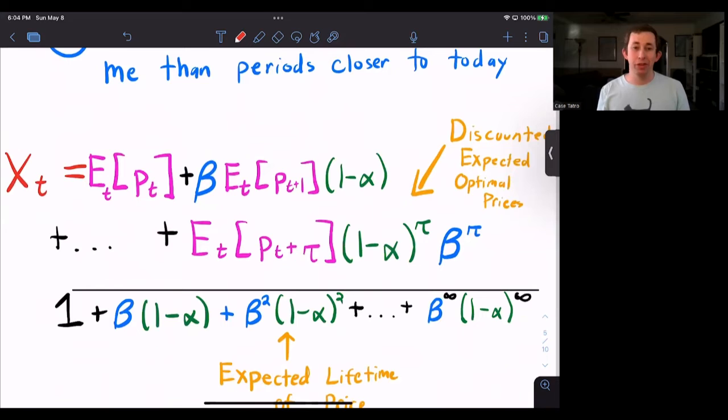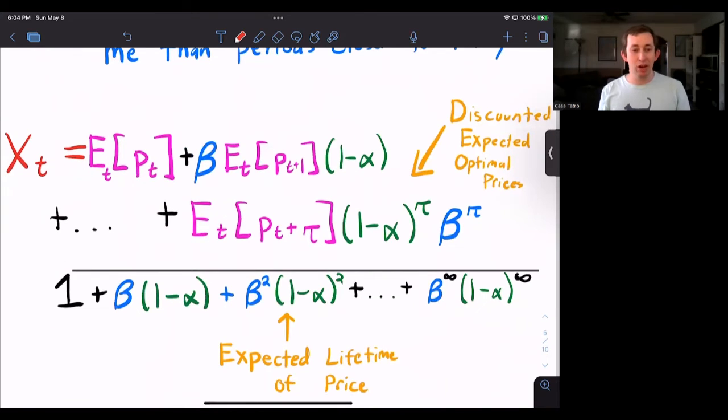So here's just me writing out the optimal price for the firm. It's the expected level of the price today, plus the discount factor of the price level tomorrow times the chance that I can't set my price tomorrow, which is one minus alpha. Then it keeps going and going where all the way at the end is my expected value today.